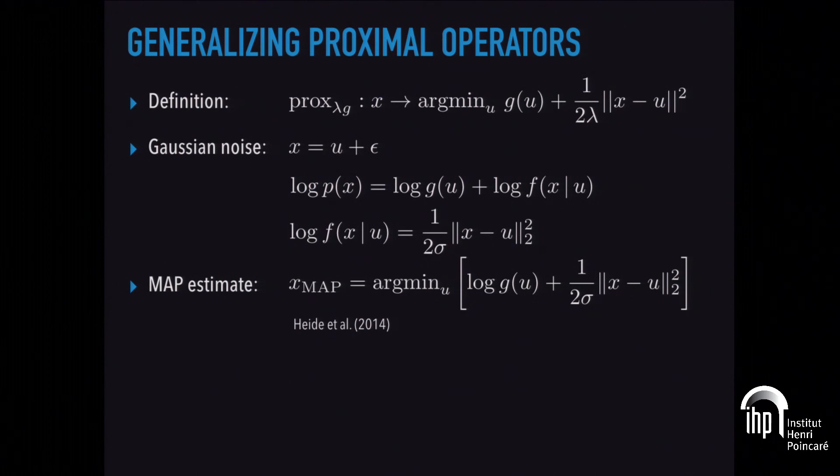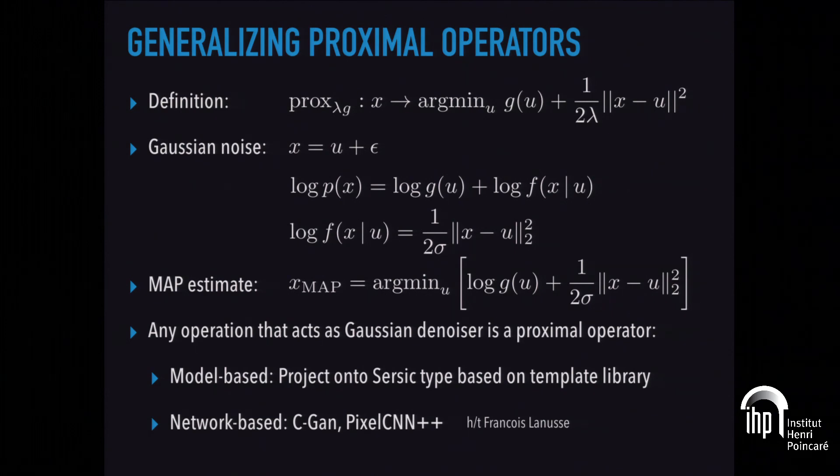That means you can express anything that is a MAP estimate. A MAP estimate under Gaussian noise is identical to a proximal operator. Just think about this. This is quite clever because it just says that the reason you are not at the right location is because noise was added to your problem. But the prior here is noise-free, is in the noise-free space. That allows you to do even wider variety of things that are proximal operators, such as you can project onto a template library of Sersic types. I've done that. So now all of your galaxies can only have solutions that look like Sersic profiles. It's not very clever to do this, but you can do it.